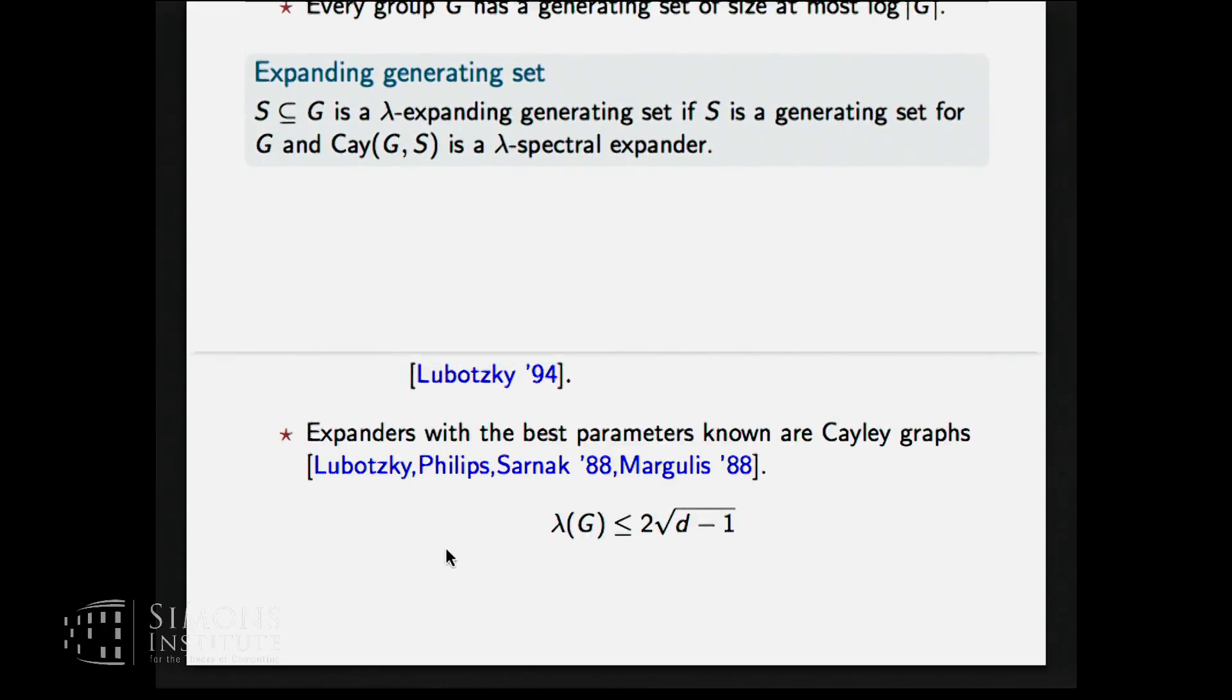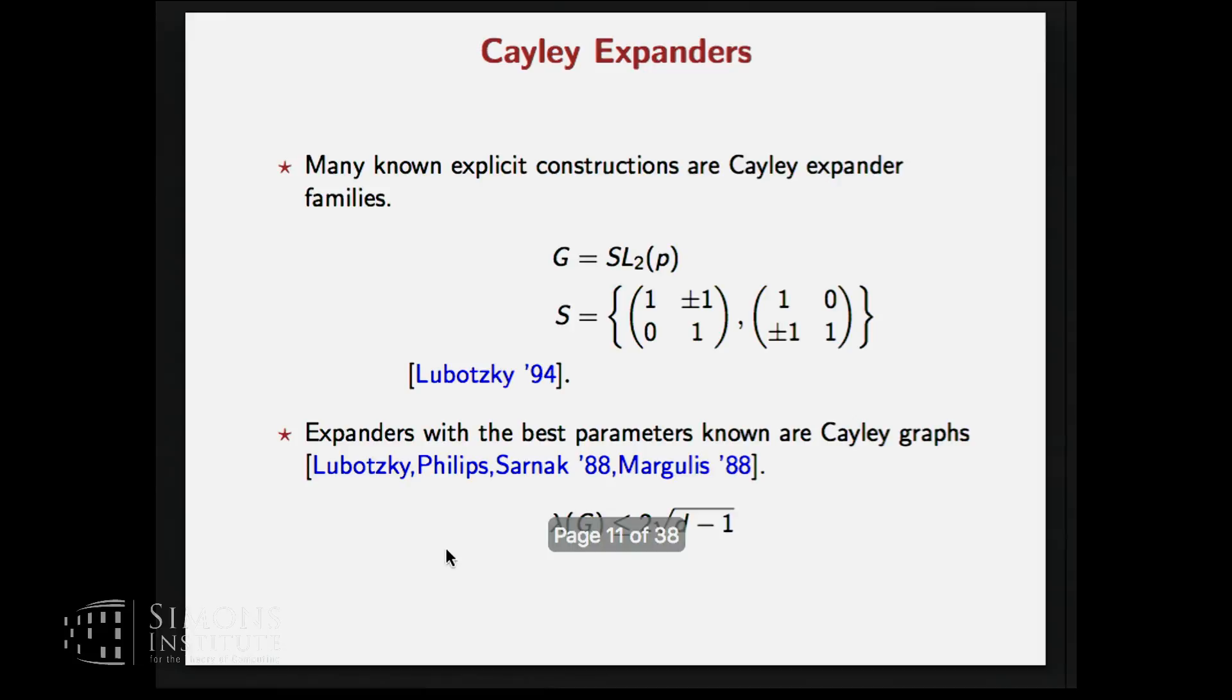There is nothing new about this because in fact many known expander constructions come from groups. So for example, this one by Lubotzky and there is another one by Lubotzky-Phillips-Sarnak and Margulis. But what we want to, so this is for specific groups, our question is about all groups. So for all groups is it possible to get a generating set which gives a good expansion in the Cayley graph.